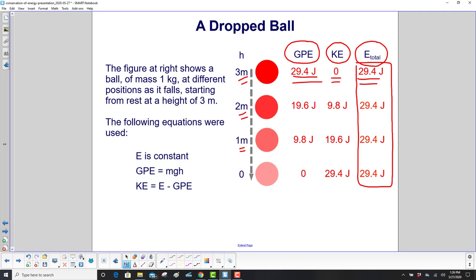So next we go to find GPE again, but this time at two meters. So then it's m times g times two meters, 19.6 joules. At one meter, m times g times one meter, 9.8 joules. And at the bottom, there is no GPE. The height is zero. So we now have all of this filled in.